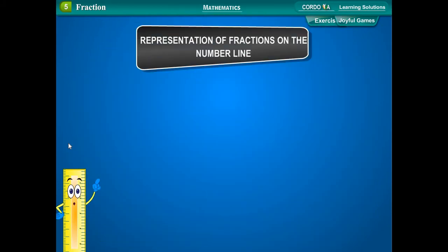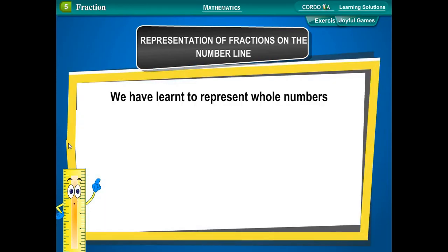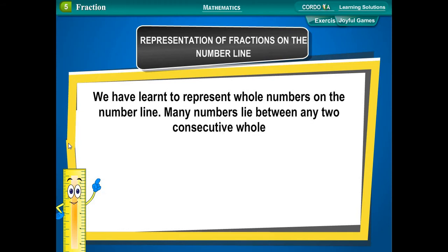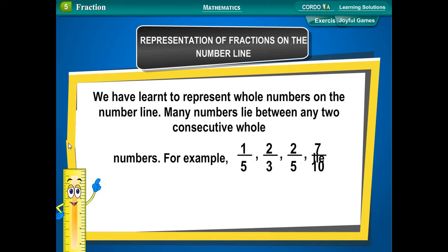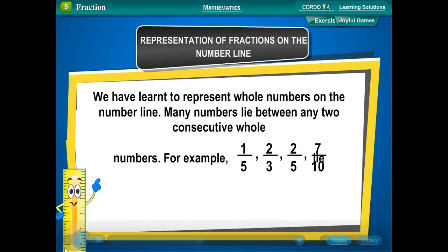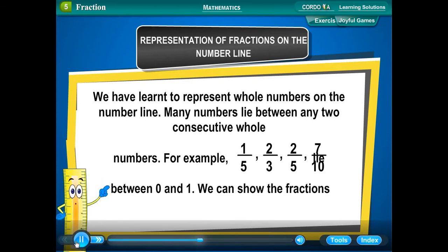Representation of fractions on the number line. We have learned to represent whole numbers on the number line. Many numbers lie between any two consecutive whole numbers. For example, 1 upon 5, 2 upon 3, 2 upon 5, and 7 upon 10 all lie between 0 and 1.